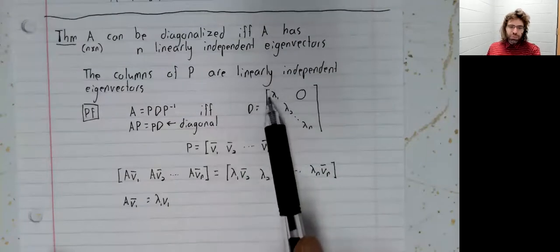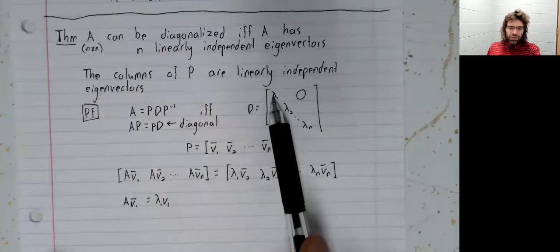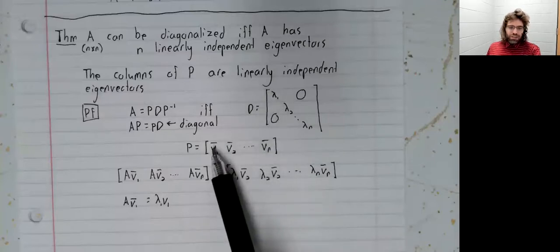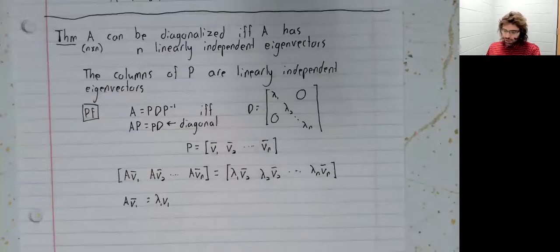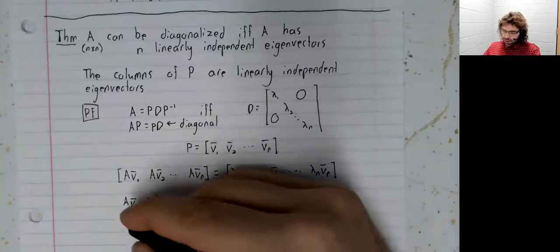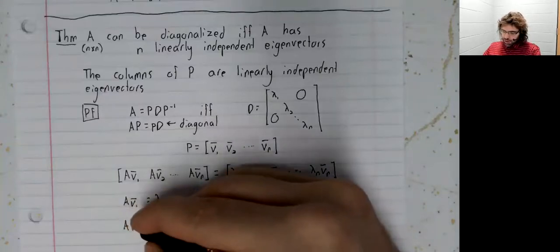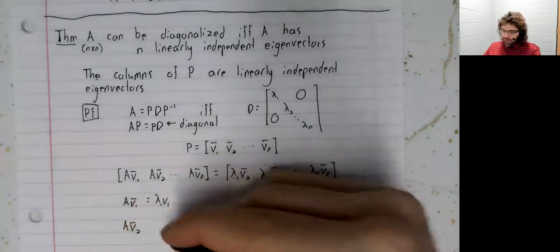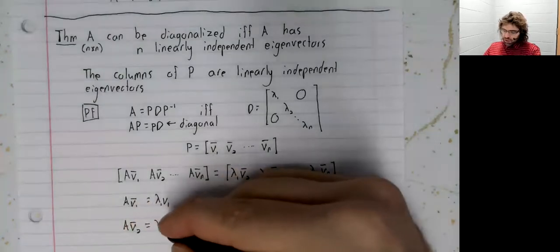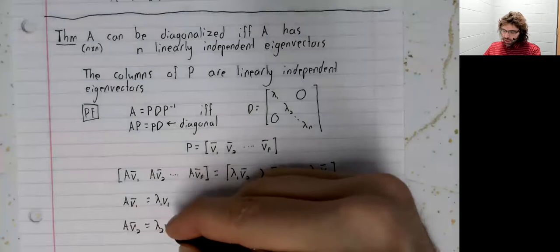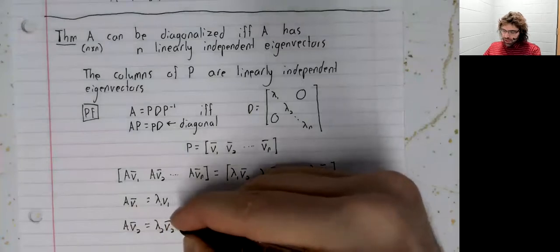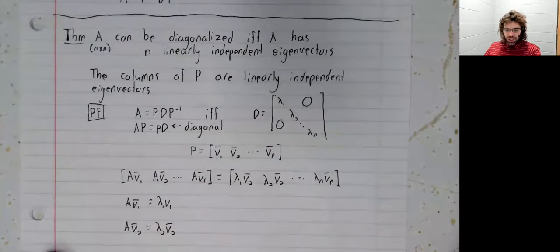Lambda one is an eigenvalue. V one is an eigenvector. And so on down the line. All of these equalities are eigenvalue eigenvector conditions.